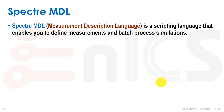Finally, I wanted to mention Spectre MDL. This is a relatively new Measurement Description Language that Cadence has added to their simulation suite. It's a scripting language that enables you to define measurements in batch process simulations. Previously, we used external languages such as Python for running Spectre netlists in a Linux environment. Now Spectre provides MDL, which can replace that and enable all kinds of scripting in an internal language, and can also access things like Viva, which are not as easy to do with external Python-based approaches.